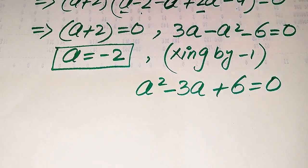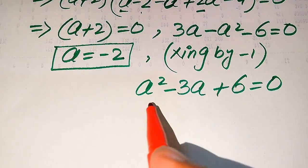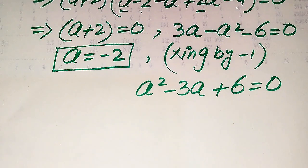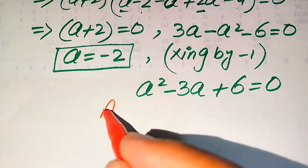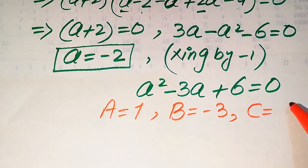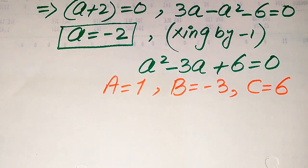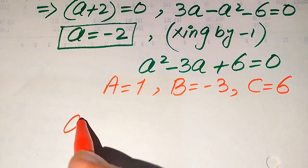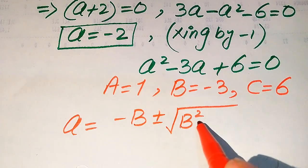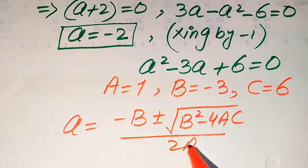We now have a quadratic equation. There are three methods to solve it: factorization, completing the square, or the quadratic formula. We apply the quadratic formula. The coefficients are: a equals 1, b equals negative 3, and c equals 6. The quadratic formula is: x equals (negative b plus or minus square root of b squared minus 4ac) divided by 2a.